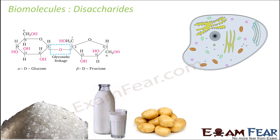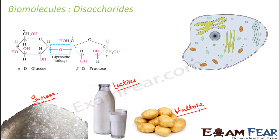Now let us talk about the next group of carbohydrates — disaccharides. These are carbohydrates which on hydrolysis give two units of monosaccharides. Some common examples of disaccharides are sucrose, which is cane sugar; lactose, the sugar present in milk; and maltose, the sugar present in vegetables and germinating seeds. These three consist of two monosaccharide units.